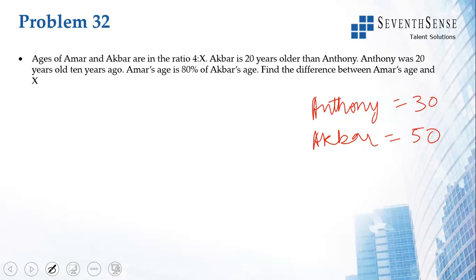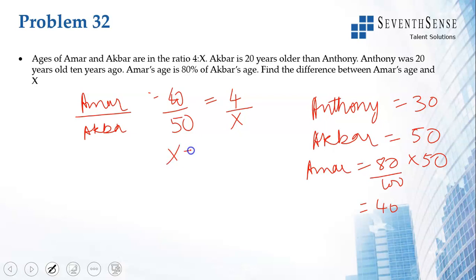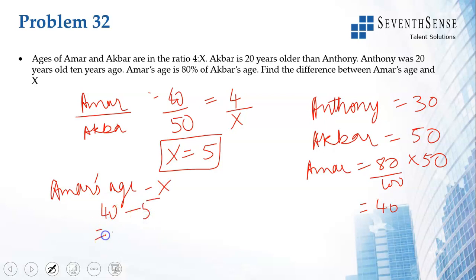Ammar's age is 80% of Akbar's age, so Ammar = 0.80 × 50 = 40. Ammar to Akbar is 40:50 = 4:5, so x = 5. They have asked for Ammar's age minus x: 40 − 5 = 35. The answer is 35.